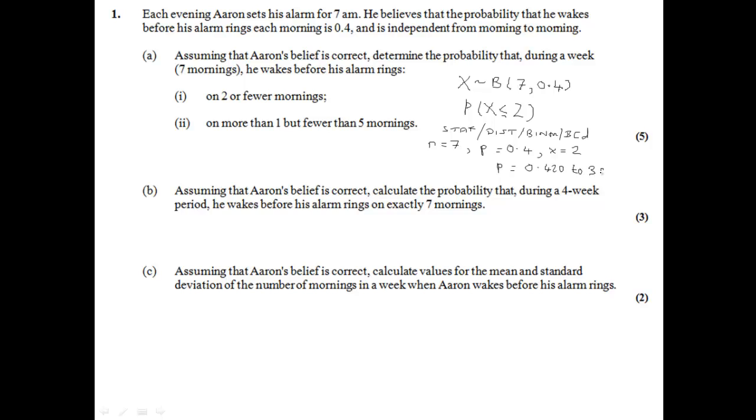N equals 0 to three significant figures. For the next part of the question we want the probability that he wakes before his alarm rings on more than one but fewer than five mornings. Well if it was just fewer than five mornings that would mean four or less. So we want the probability that X is less than or equal to four mornings. But we don't want one or zero, it has to be more than one. So we need to subtract the probability that X is less than or equal to one.